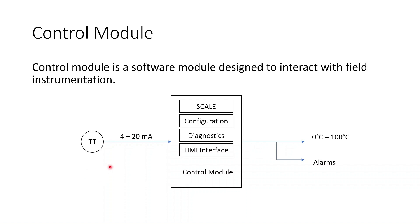This is just one category of control module because we are talking about transmitters, but in real applications you will have different types: pressure transmitters, flow transmitters, digital inputs like switches, analog valves like control valves, digital valves like isolation valves, DOL starters for motors, and VSD starters for motors. For each of these individual field devices you will have a separate control module with its own set of properties, and these control modules are going to be the interface between the field devices and the rest of your PLC code.